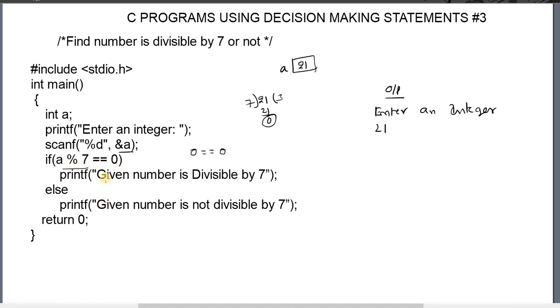Now this condition is true, so the if statement, this printf, will be executed. When the statement is executed we will get this message: given number is divisible by 7.